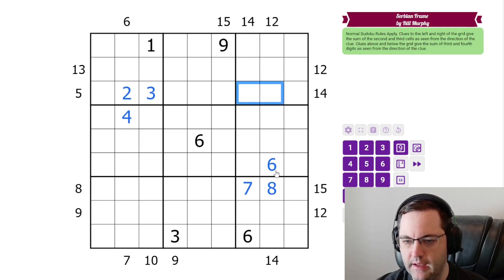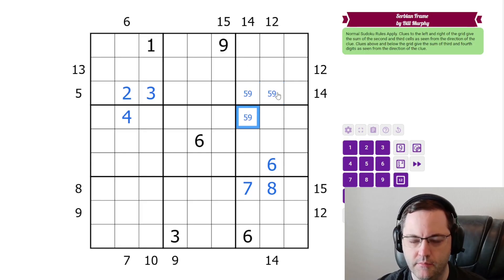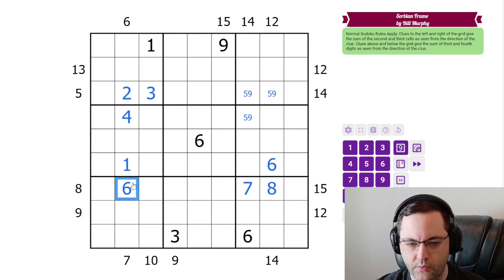Now this 14 can't be six, eight, so it must be five, nine. And this 14 must also be five, nine. The seven can't be two, five or three, four, it must be one, six in that order.